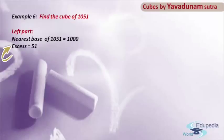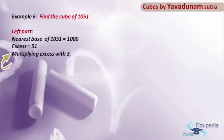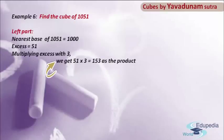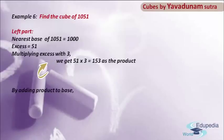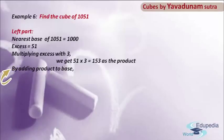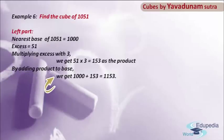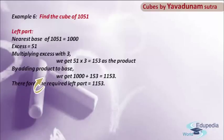After finding the excess, moving to step number 3, we have to multiply the excess with the number 3. So by multiplying 51 by 3, we get 153 as the product. After getting this product, we have to add this product to the base. So 1000 plus 153 equals 1153, and this 1153 is regarded as the required left part.